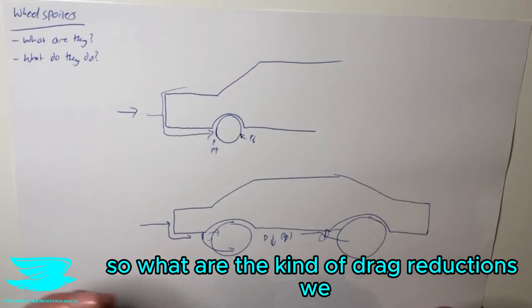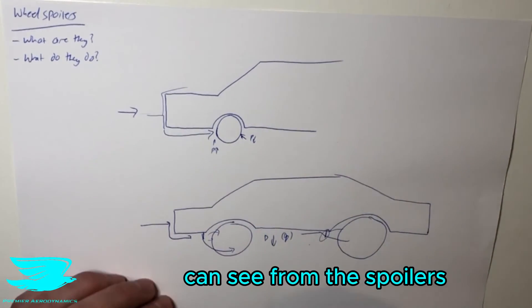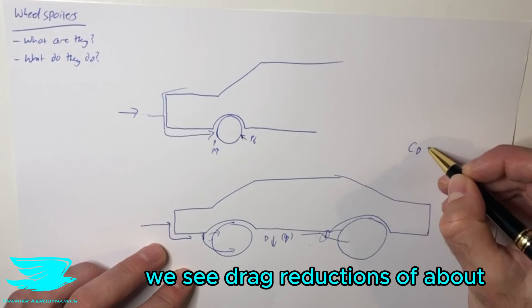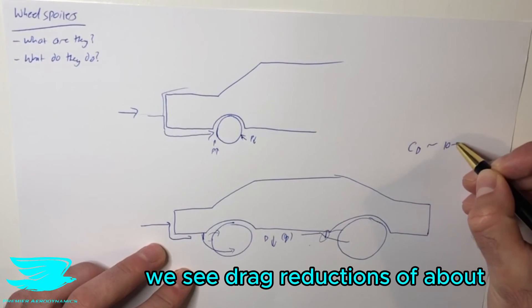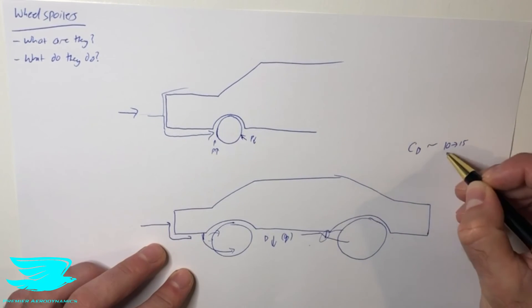So what kind of drag reductions can we see from these spoilers? Usually in the drag coefficient, we see drag reductions of about 10 to 15 counts. Counts, not percent.